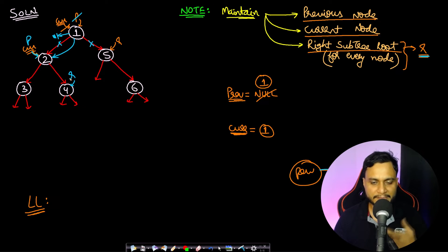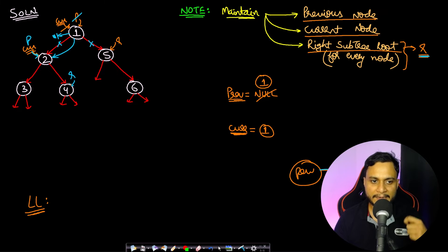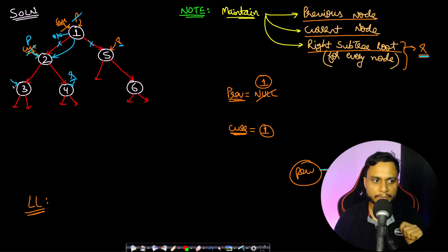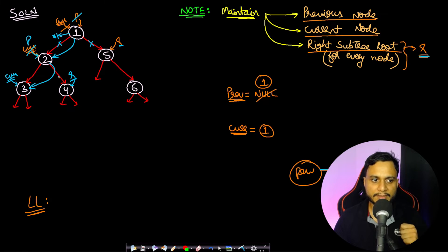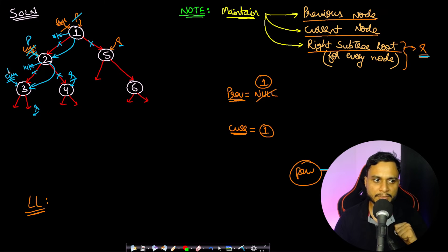The R pointer is declared inside each recursion call, so every recursive call has its own separate copy of R on the call stack, while previous has only a single shared copy. Current moves to left child 3. Previous is non-null, so make previous's right pointer point to 3 (delink right, relink to 3), and set the left pointer to null. Update previous to 3, set R to null (no right child), and current moves to left child of 3, which is null — the base case.